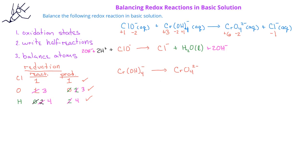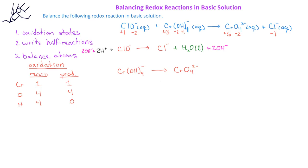To balance the oxidation half reaction, the chromiums are already balanced and we have four oxygens on each side, but we have four hydrogens on the reactant side and none on the product side. We balance the hydrogens by adding four H⁺ to the product side, but since this is basic solution, we neutralize those hydrogen ions by adding four hydroxides to each side of the equation.